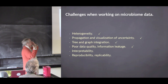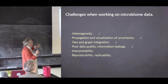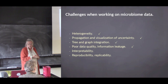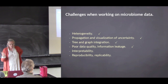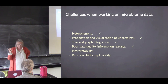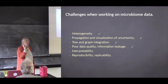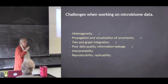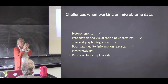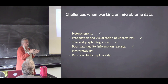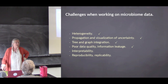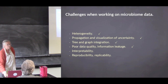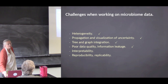Some of you had to miss one or two of the lectures. I talked before about heterogeneity, propagation, and visualization of uncertainty. I talked about trying to integrate tree information and look at graphs. Yesterday we talked about poor data quality, using probabilities, and trying to avoid what I called information linkage. Today I'll talk about interpretability, which is really important in statistics — there's no point in being right if you can't communicate to your biologist. And the big challenge in statistics has to do with reproducibility and replicability of our results.